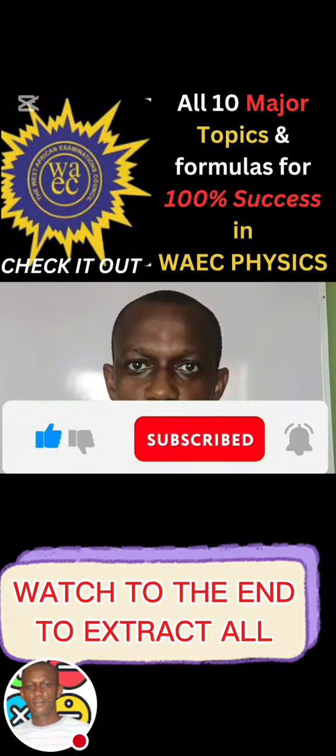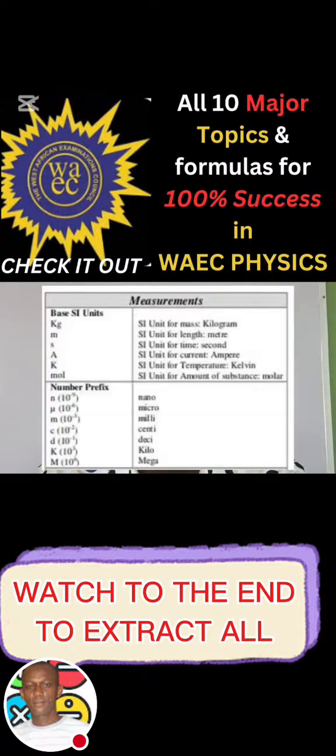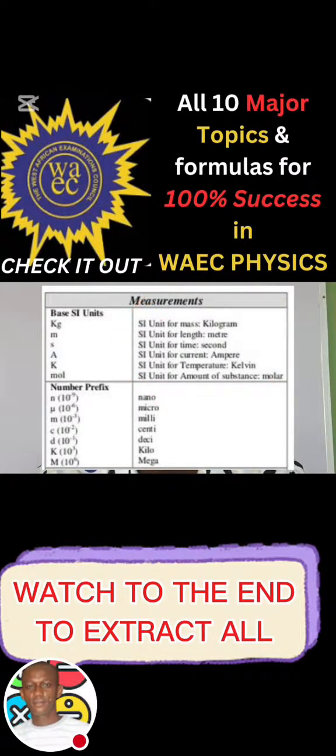There are 10 major topics that WAEC always sets questions on in terms of popularity. So I'll be dealing with these 10 topics. The first one is measurement. Under that measurement you have the units of measurement. The first one is kg, that's kilogram, that is the SI unit for mass. The SI unit for length is meters. The SI unit for time is seconds. The SI unit for current is ampere. The SI unit for temperature is kelvin, and the SI unit for the amount of substance is mole. You have to take note of this.